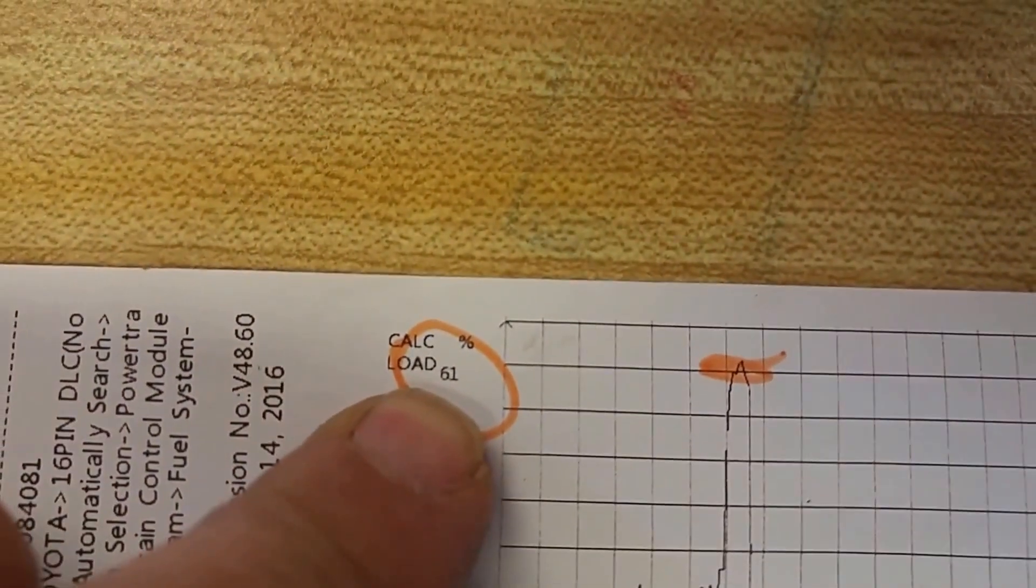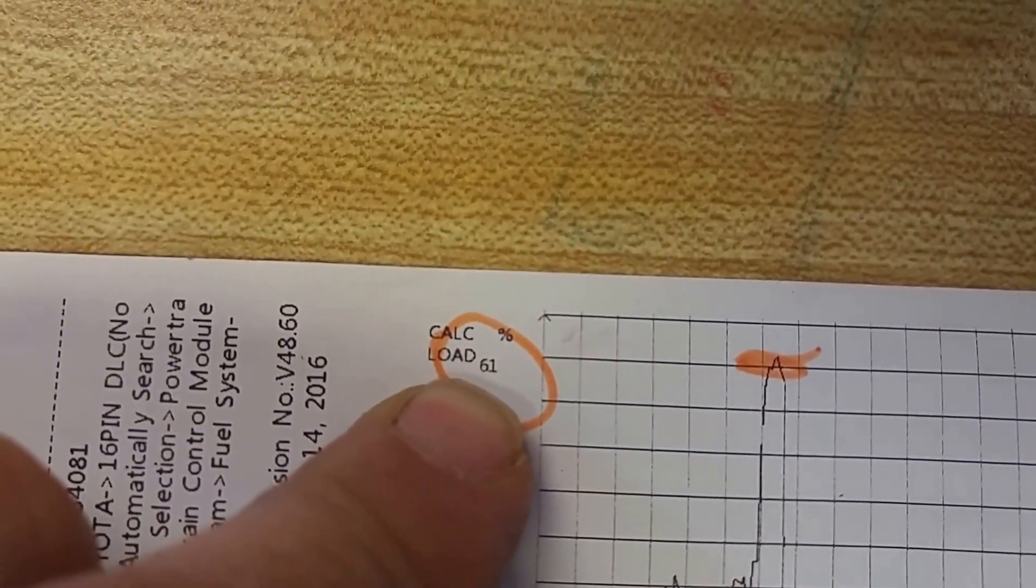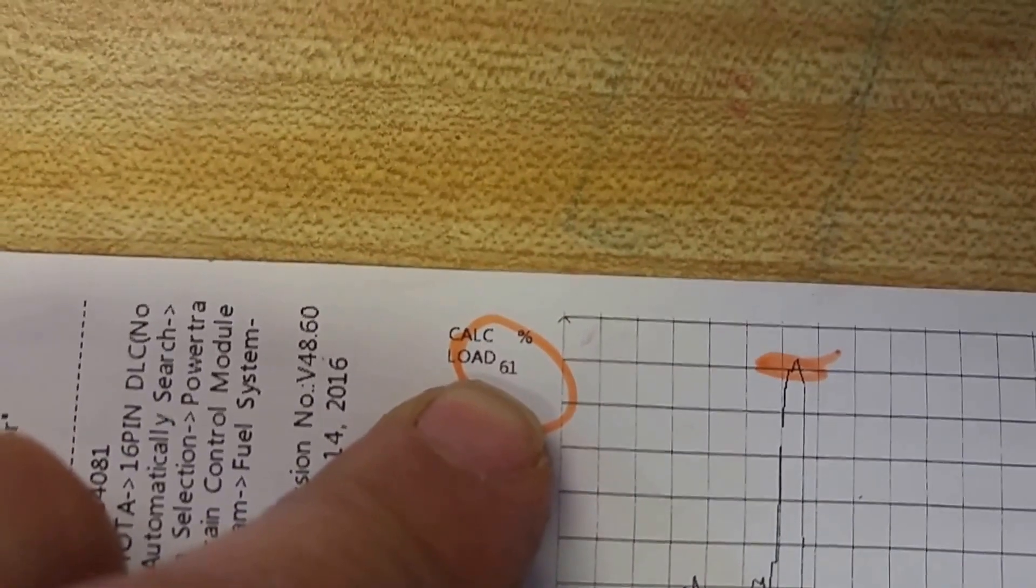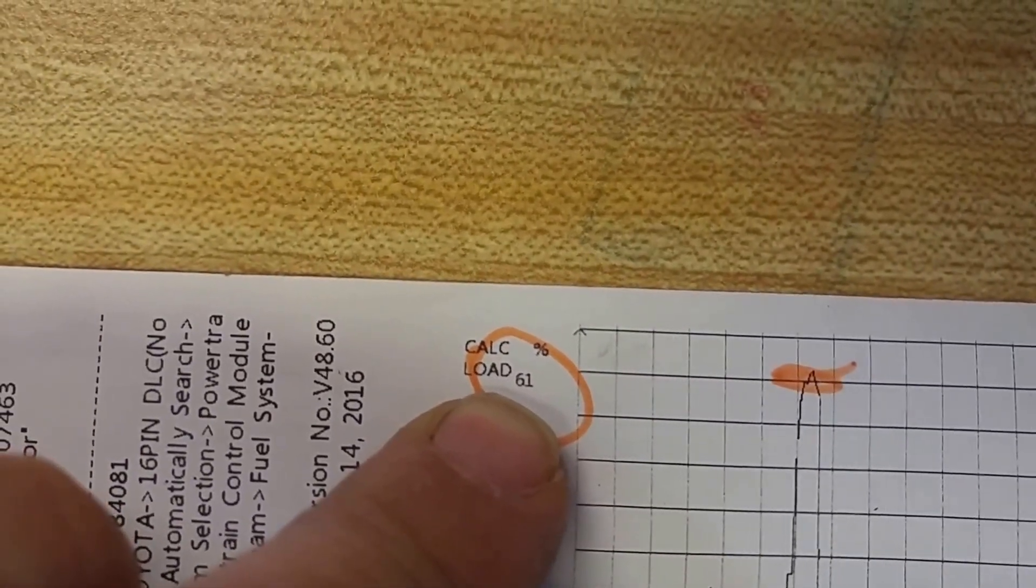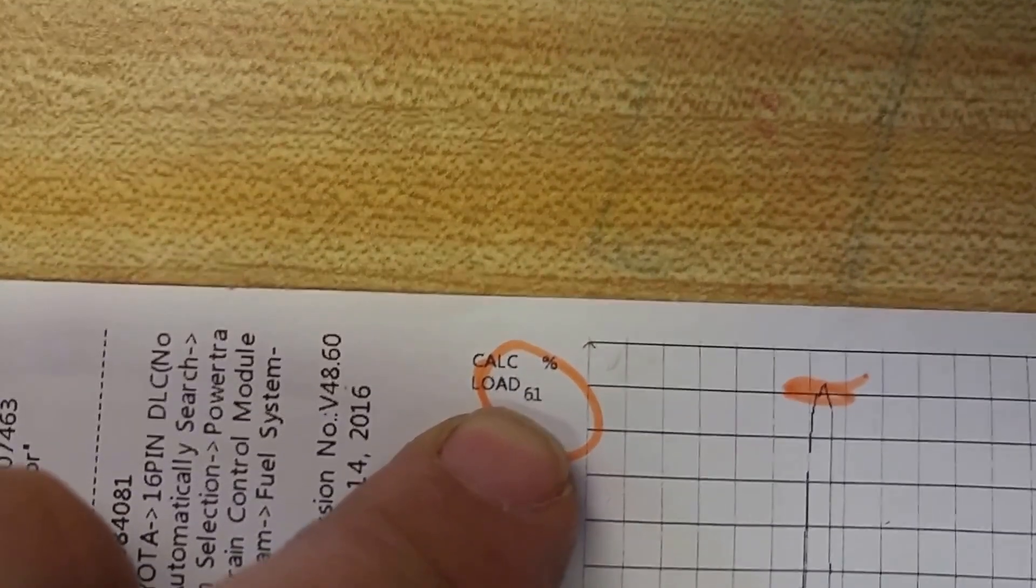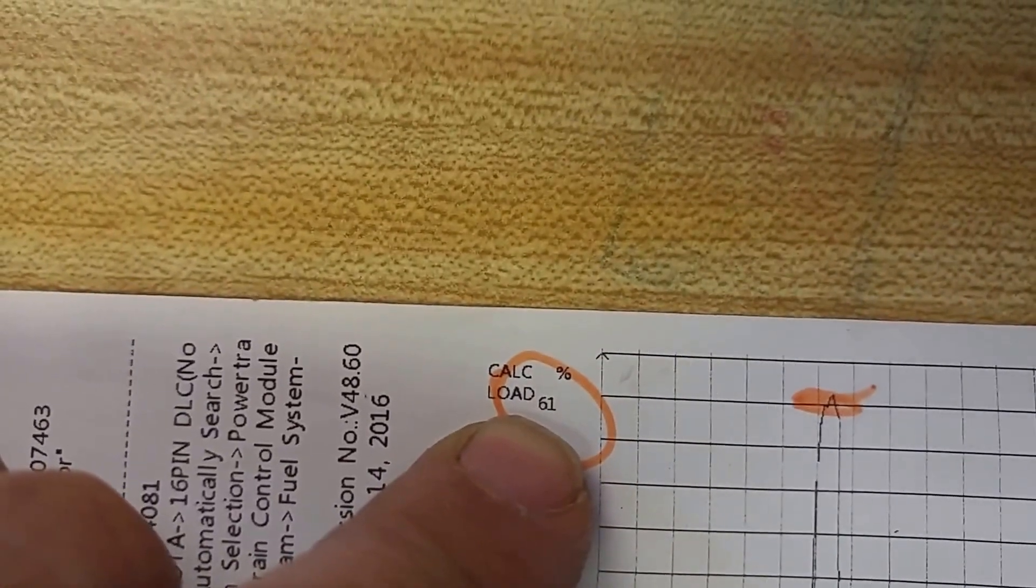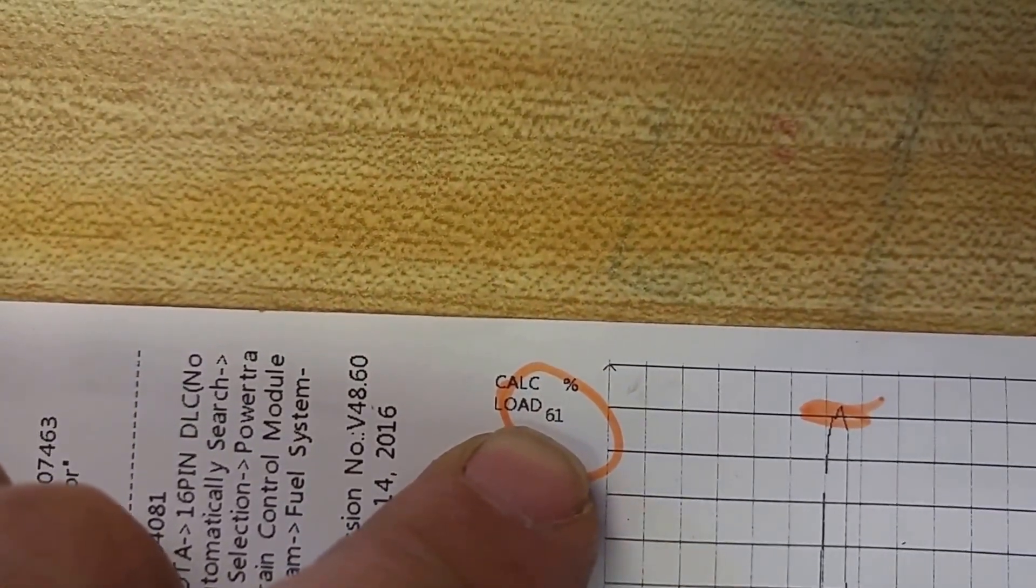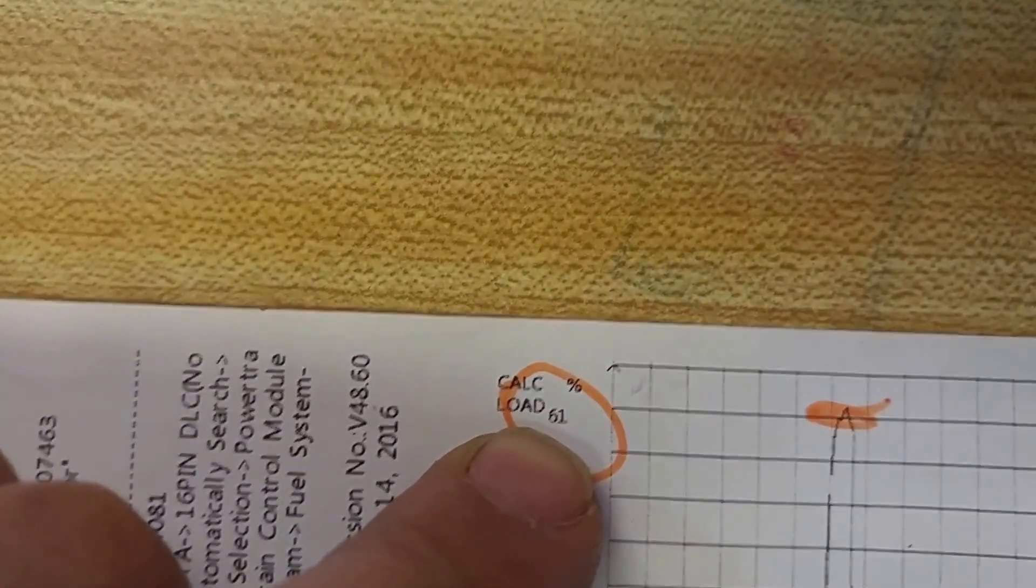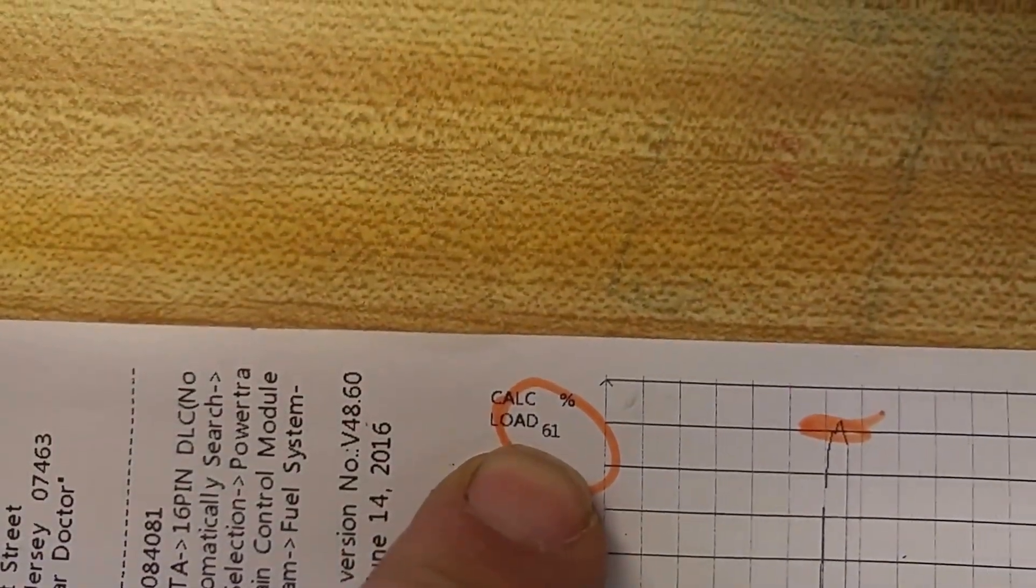I did a calculated load test. Calculated load is a measurement of how well the mass airflow sensor is reporting, or correctly reporting, air intake. In this case, and the test here is, you bring up calculated load, and you go to a wide open throttle acceleration. You're looking to see a typical calculated load value between 90 and 100 percent.